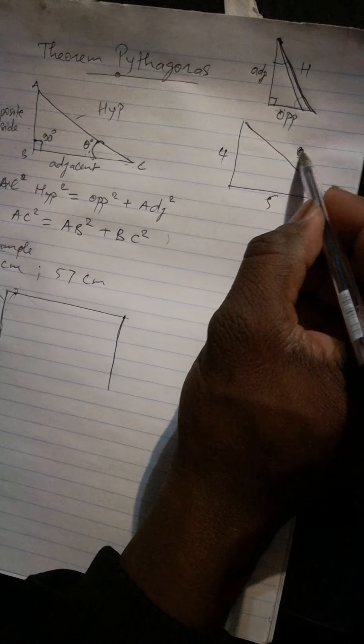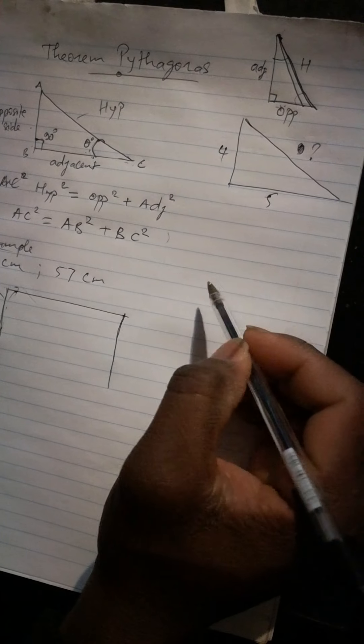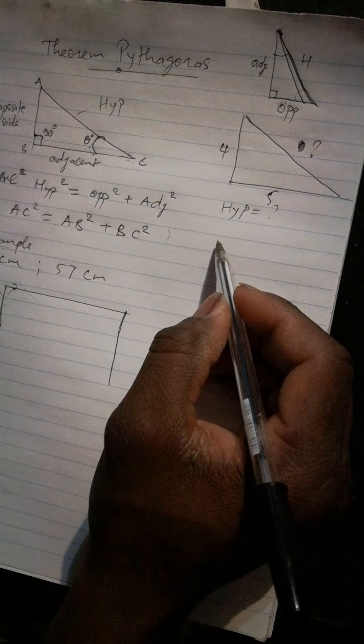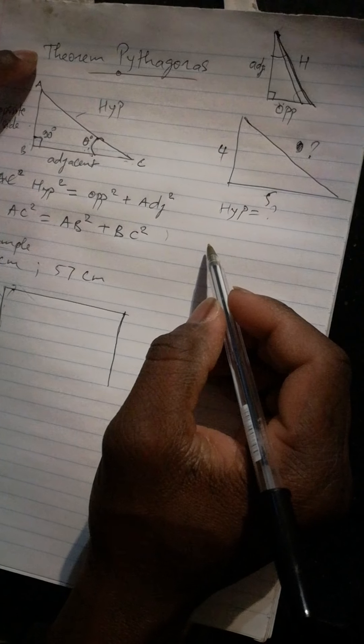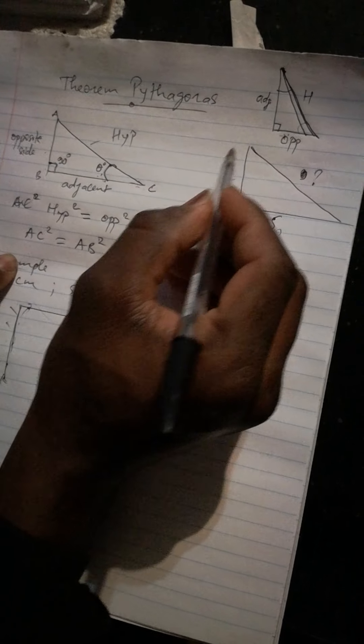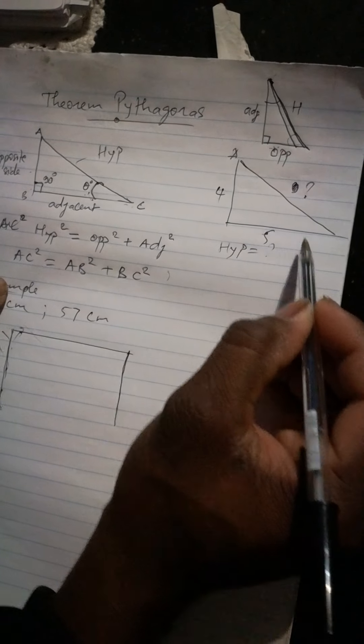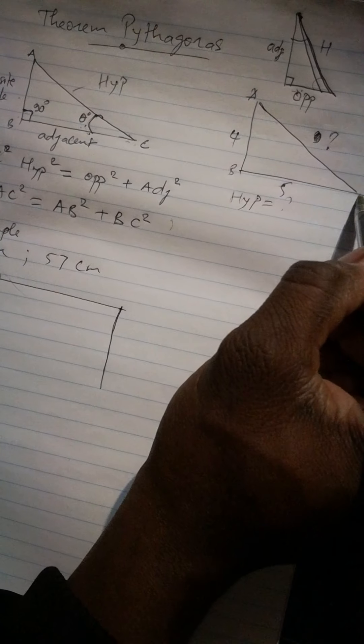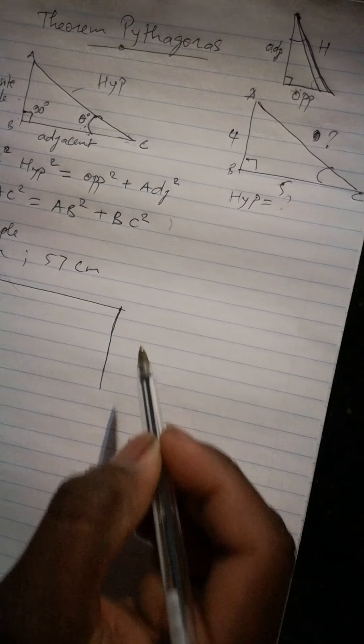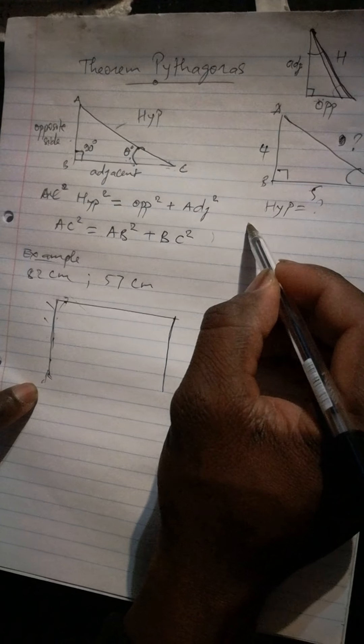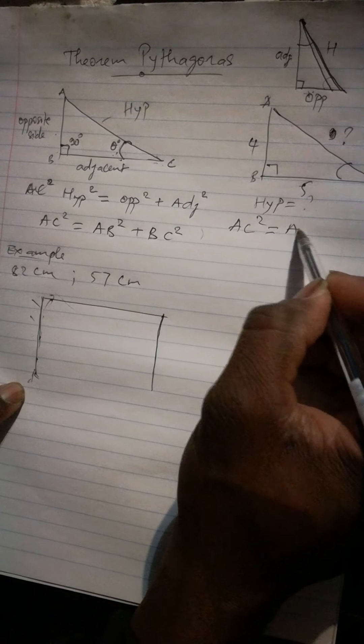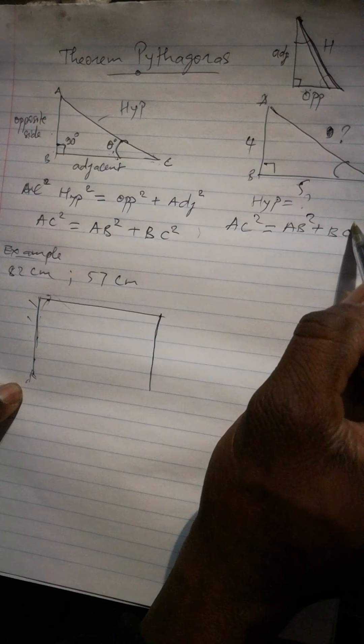Hypotenuse is equal, we don't know. So we apply Pythagoras theorem. Pythagoras say hypotenuse square, and now we can call it A, B, and C. This is our right angle, this is our angle.